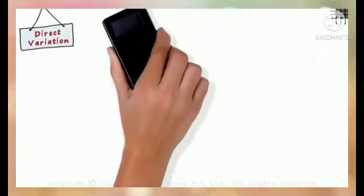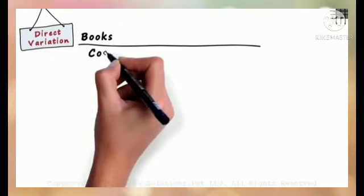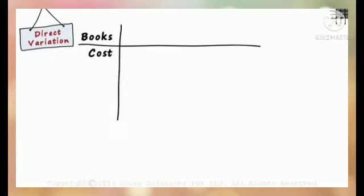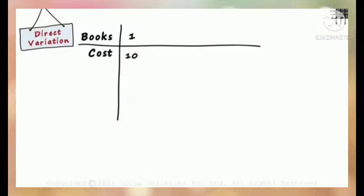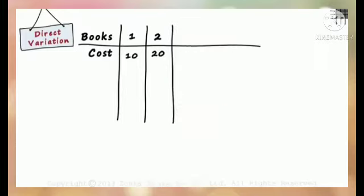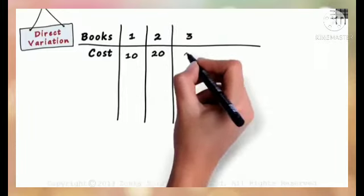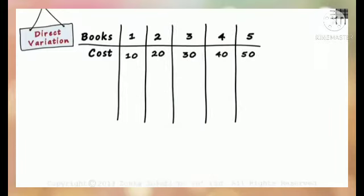Let's form a table so that you can understand better. In the first row, we have the number of books, and in the second row, we have the total cost. For one book, the cost is 10 rupees. For two books, the total cost is 20 rupees. For three books, the total cost is 30 rupees, and so on.